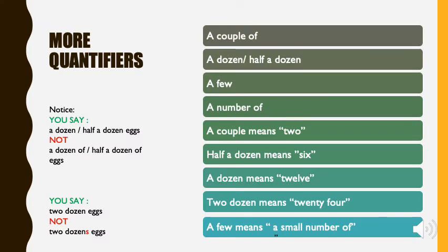More quantifiers. Here we have more expressions that we can use, such as a couple of, a dozen or half a dozen, a few, a number of. A couple means two. Half a dozen means six, six items. For example, if I have six bottles of water, I can say half a dozen bottles of water. A dozen means twelve. Two dozens means twenty-four. And a few means a small number of.